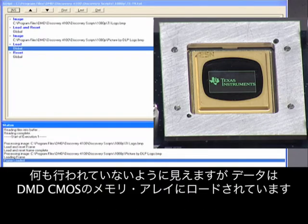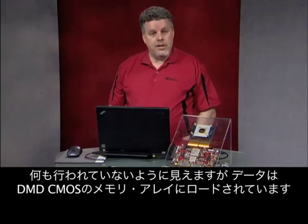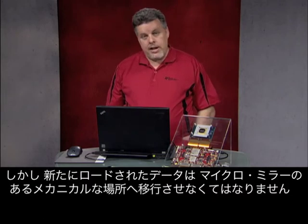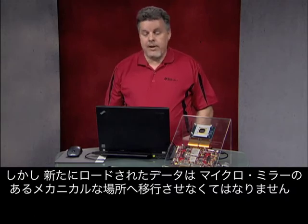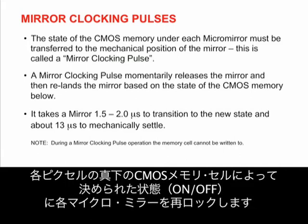Nothing seems to have happened. Rest assured that the data is loaded in the DMD CMOS memory array. However, the newly loaded data must now be transferred to the mechanical position of the micromirrors. This transfer is accomplished by sending a mirror clocking pulse to the DMD array. These pulses momentarily release the micromirrors and then relatch each micromirror in the state determined by the CMOS memory cell underneath each pixel.